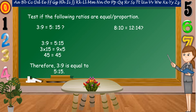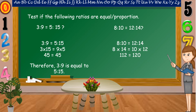Another example: is 8 is to 10 equal to 12 is to 14? To find the answer, again, we multiply the extremes and the means. Eight times fourteen is equal to 112, and ten times twelve is equal to 120. Is 112 equal to 120? No, it is not equal. Therefore, 8 is to 10 is not equal to 12 is to 14.